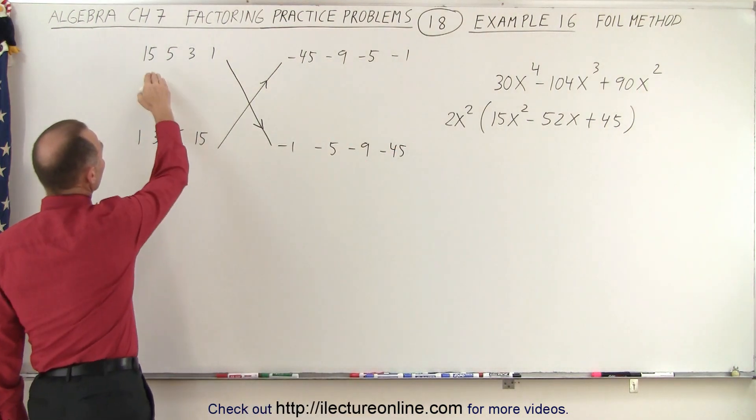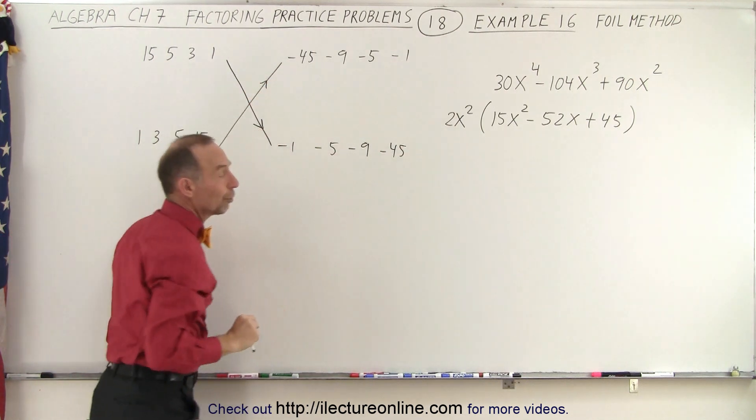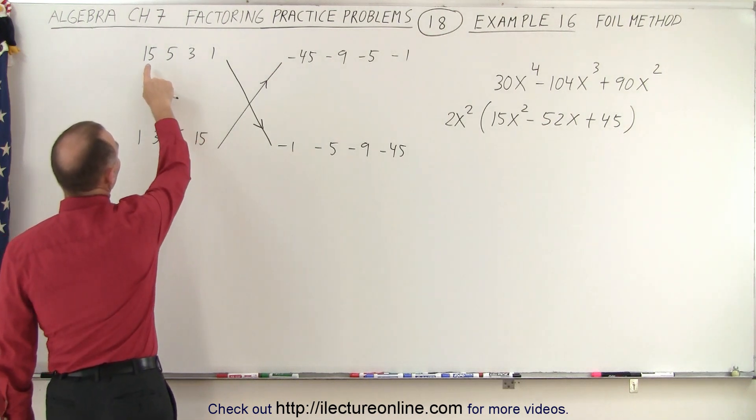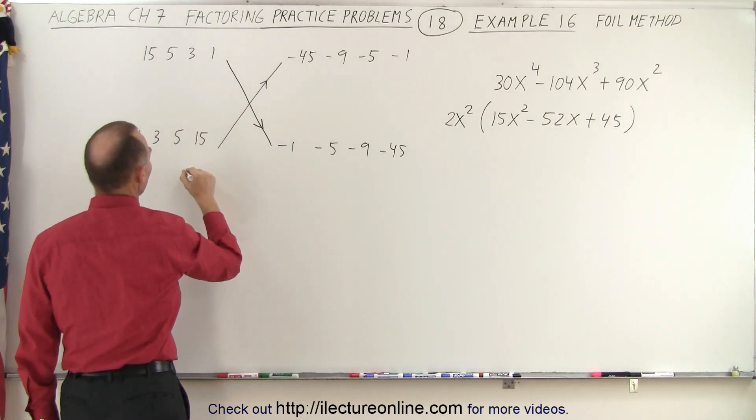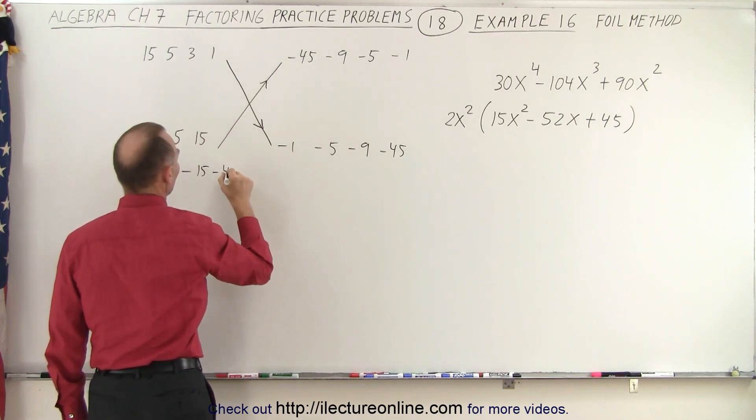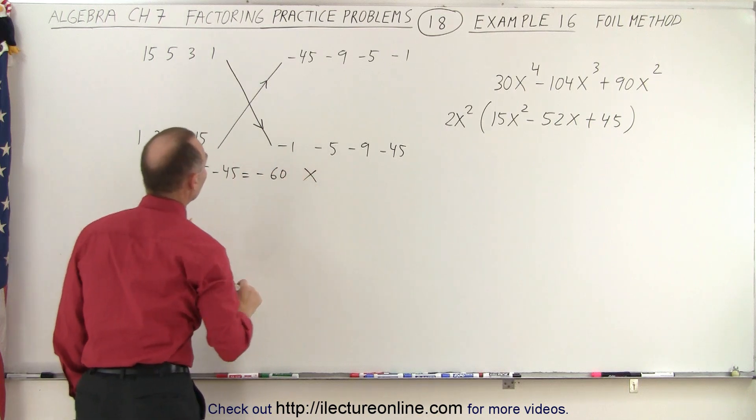So which combination here, multiplying this times this plus this times this gives us the middle term minus 52. Well, let's try it and see what we get. How about 15 times negative 1, that's minus 15, and 1 times negative 45, minus 45, is equal to minus 60. Of course, that's not 52.